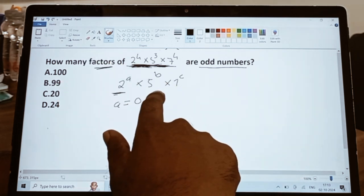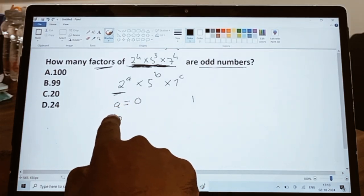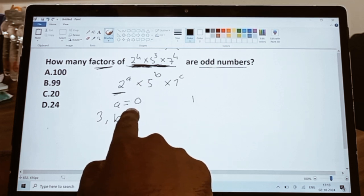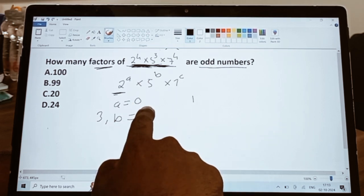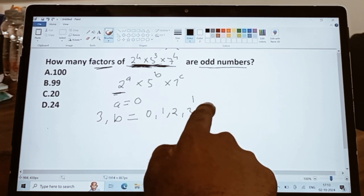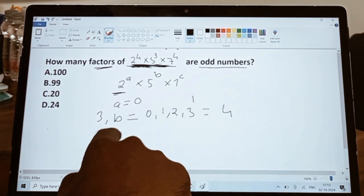All right, so for 'a' this can take only one value. Now let's understand the values for b. The highest value for b is 3, so till 3 how many possible values can b take? That is 0, 1, 2, and 3. Now there are four possible values that b can take.